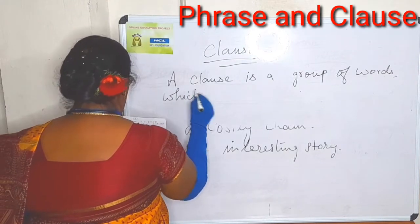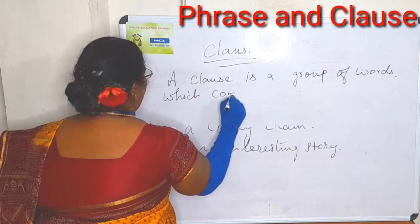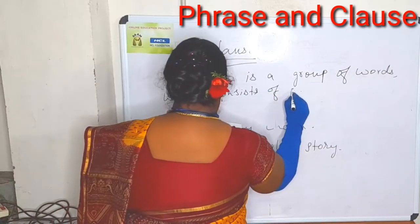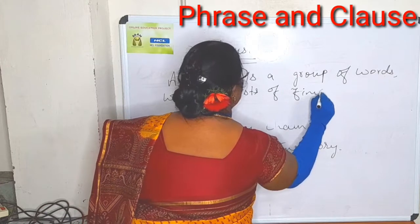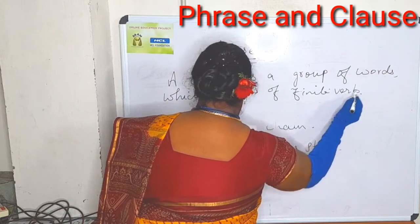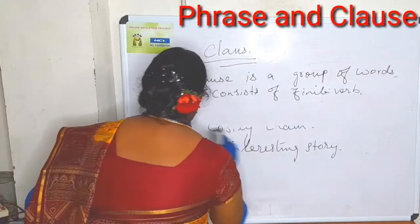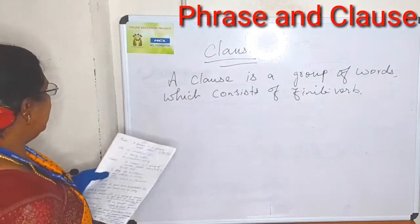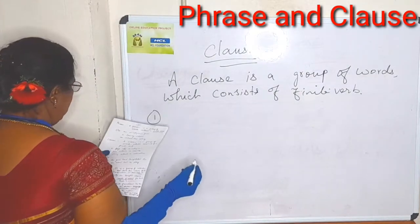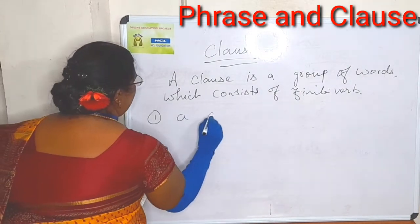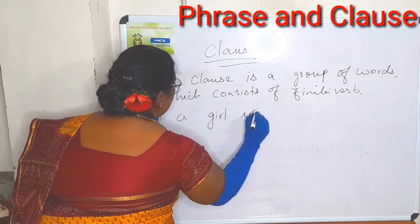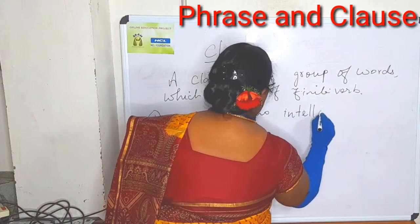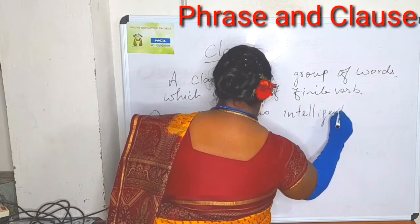If you go to higher classes, you will never forget these formulas. Consists of a finite verb. Here, three sentences are given. One is: a girl who is intelligent.